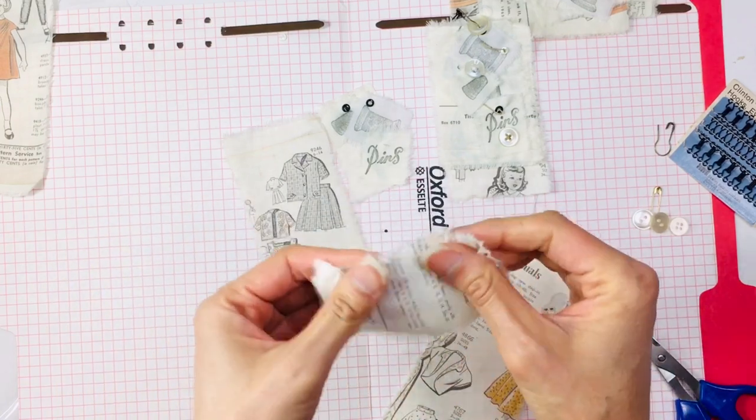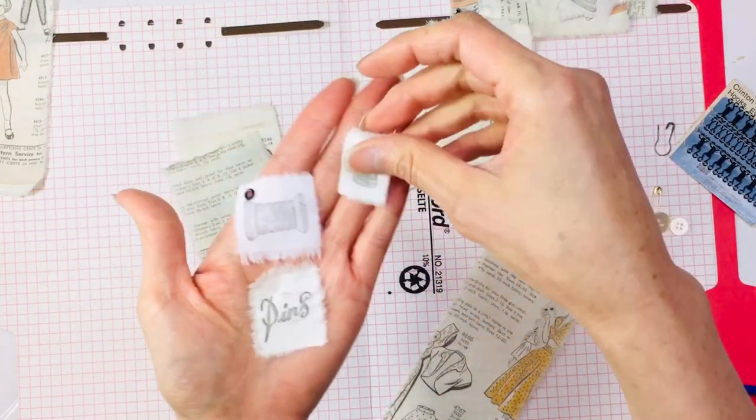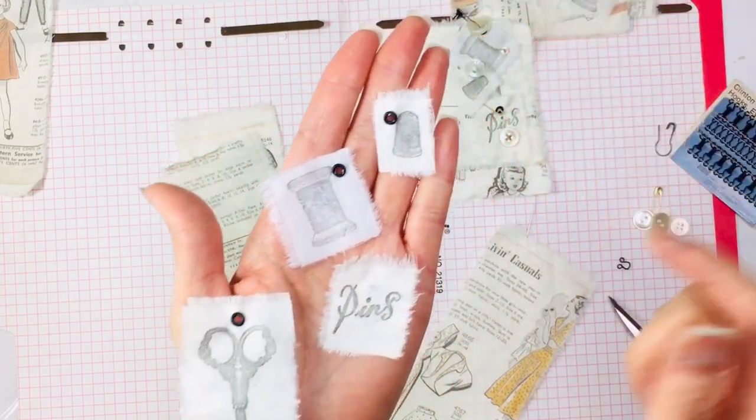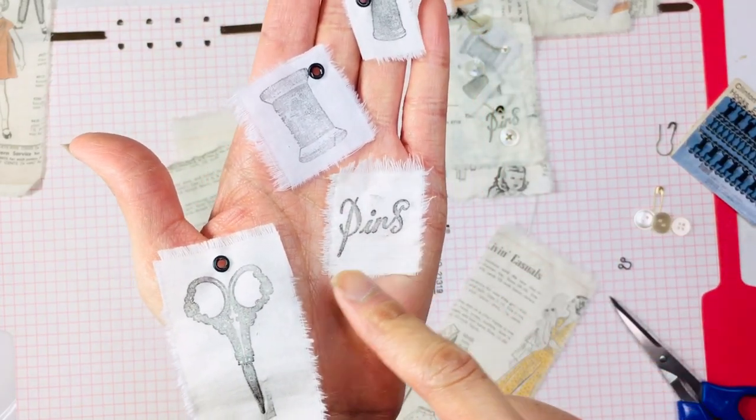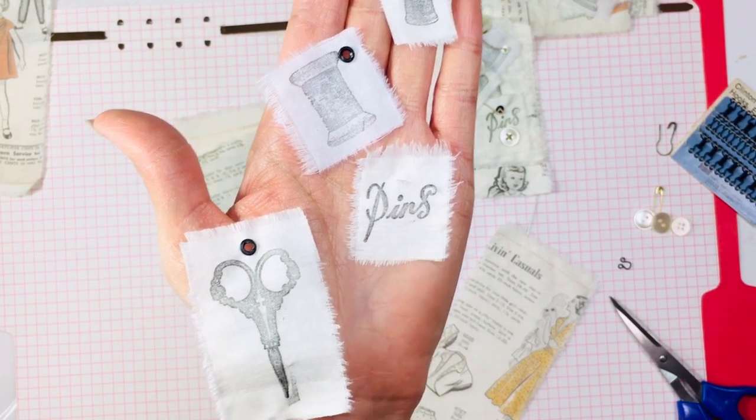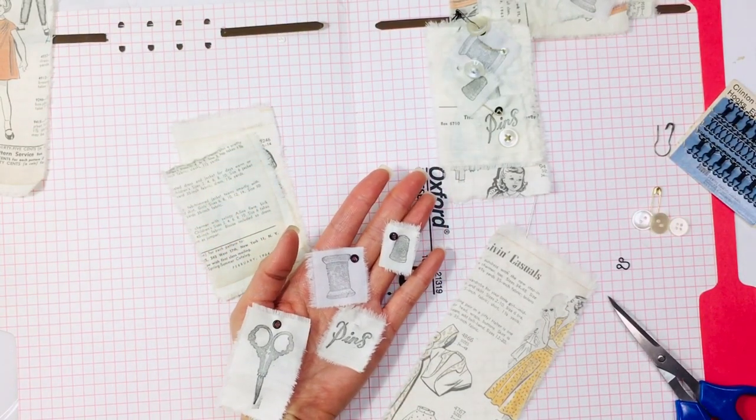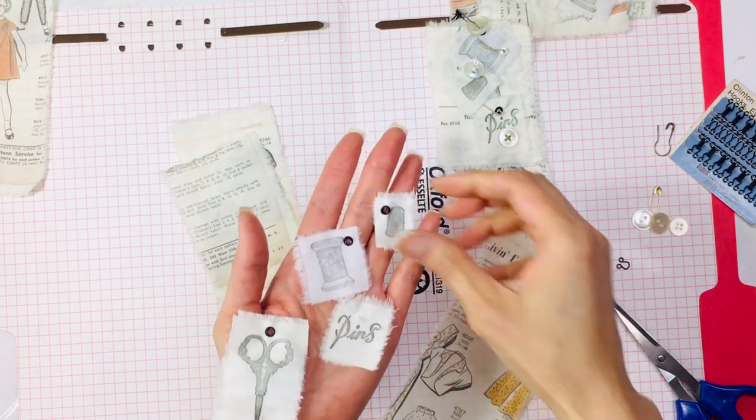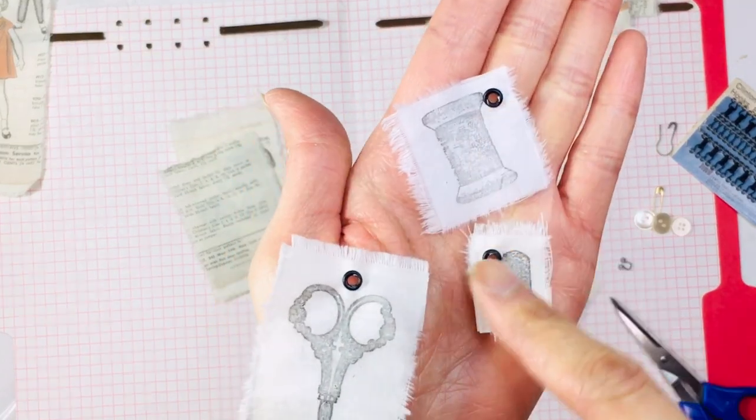I then took just regular cream fabric or a white fabric and I stamped, I just took my rubber stamps and I stamped them on here. I have a thimble, a spool of thread, this word in a really cool font, pins and some scissors. I should have brought that stamp set over. It's a vintage sewing rubber stamp set. If I can find it on Amazon, I think I bought it on Amazon. I will link it down below, but then I took these three images and put eyelets in those places.